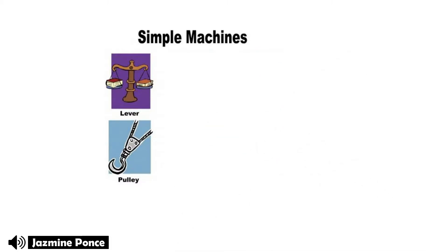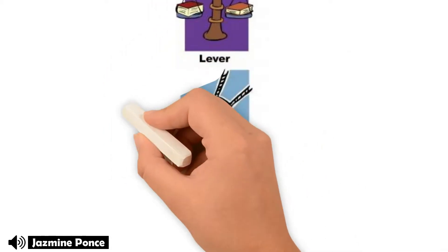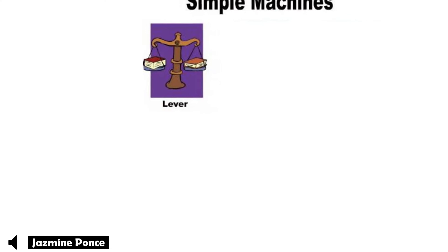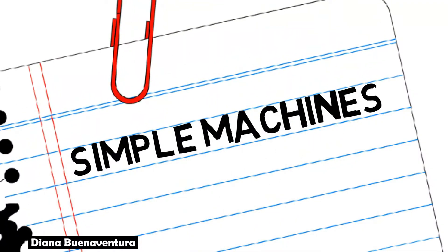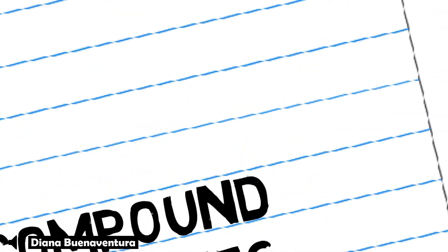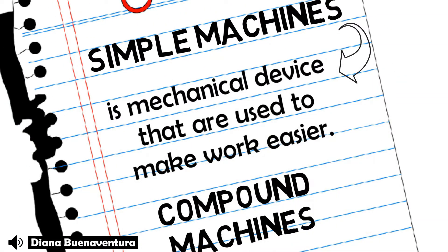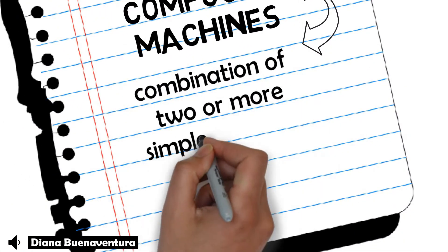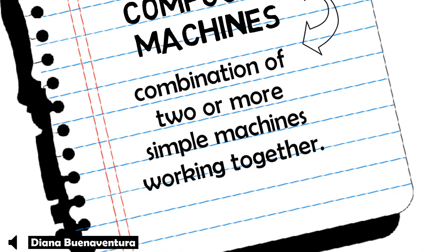But we will only discuss the simple machine lever. Before that, let's talk about the difference between a simple machine and a compound machine. When you say simple machine, it's a mechanical device that is used to make work easier, while a compound machine is the combination of two or more simple machines.